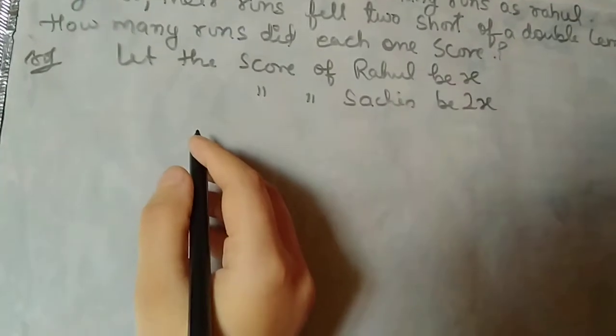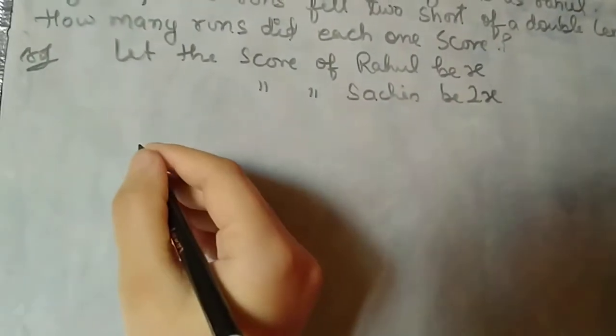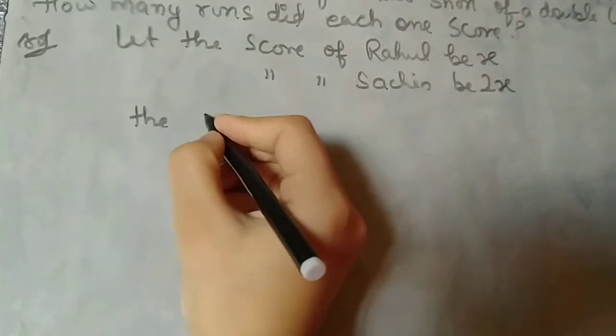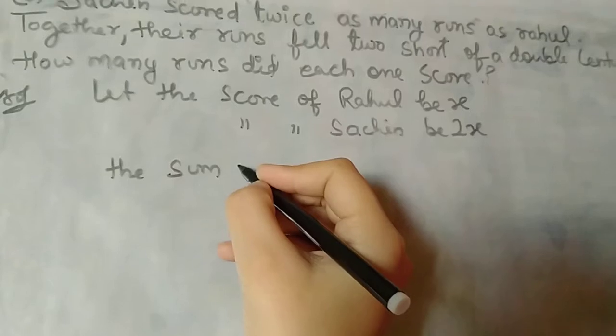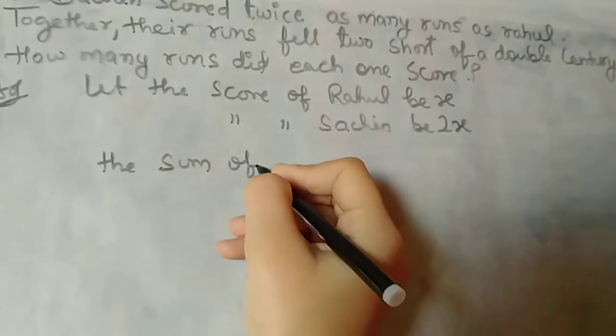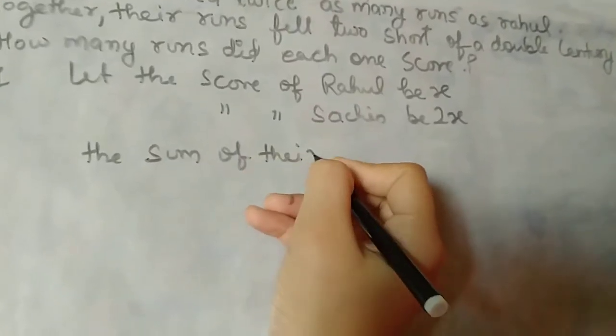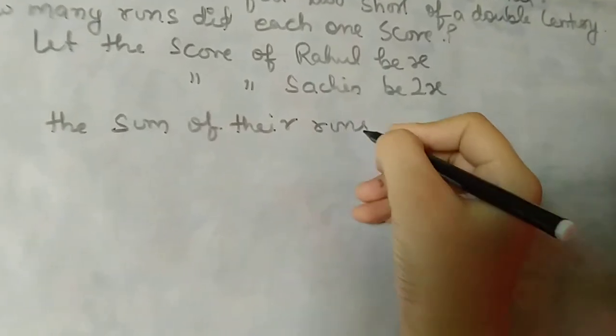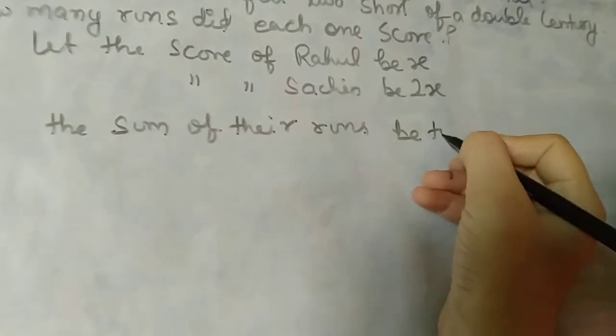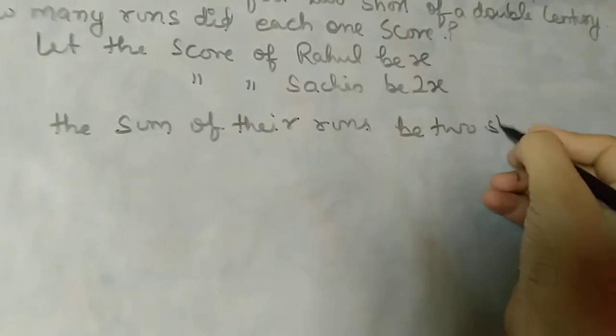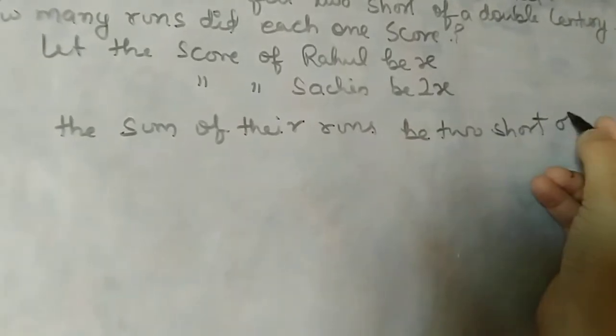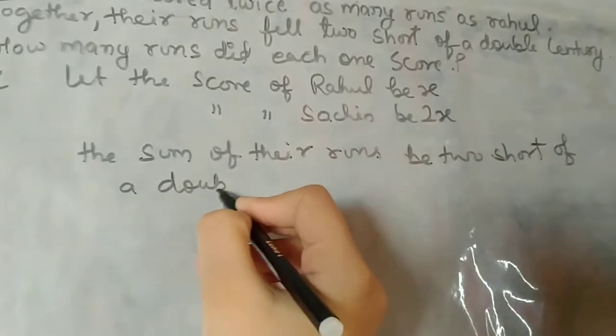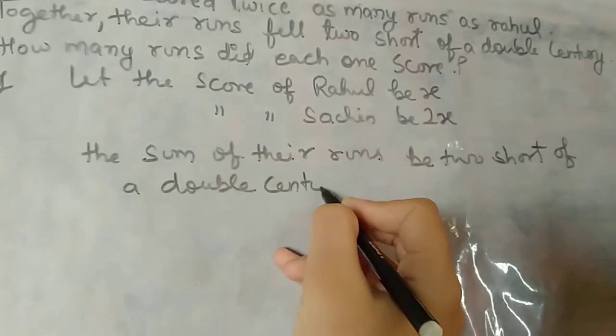Together their runs fell two short of a double century. When both of them scored, they were two runs short of 200. So the sum of their runs is two short of a double century.